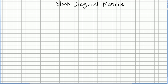This video is still on a chapter of square matrices. In the previous video we introduced the concept of square block matrices, and now we introduce the new concept of block diagonal matrix. A given matrix M is said to be a square block diagonal matrix if all blocks off the diagonal are zero matrices.